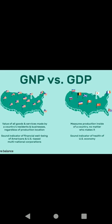For example, tea is priced at rupees 10 per cup. The value of sugar used is rupees 2. If sugar is also included in GDP, it will be counted twice — once as sugar and again as part of the cup of tea. This is called double counting, which is why intermediate goods are excluded from GDP. GDP is the total value of output of goods and services produced by the factors of production within the geographical boundaries of a country.